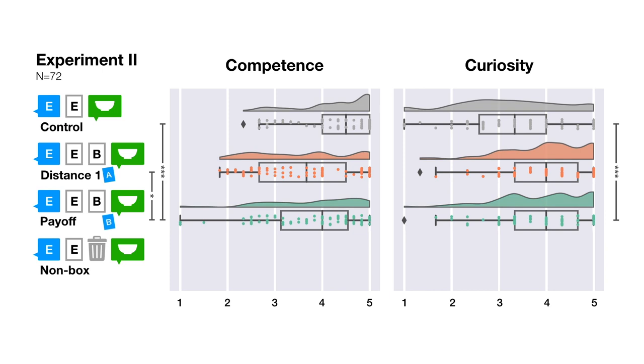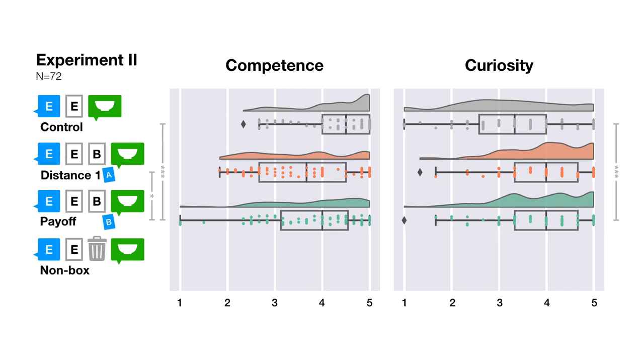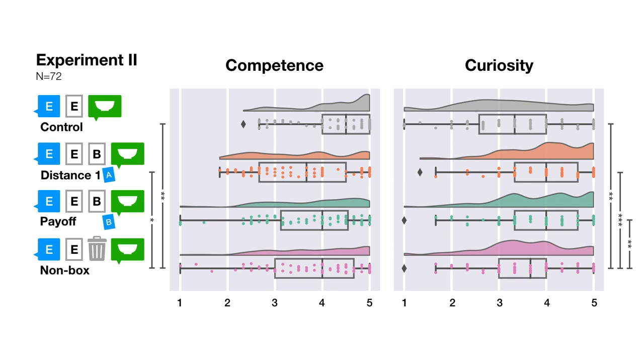While people did perceive the payoff robot as more competent, the size of the effect was lower than we had expected. The results for the trash can checking robot were unclear. The robot was perceived as more curious than the control, but to a lesser extent than the other conditions.